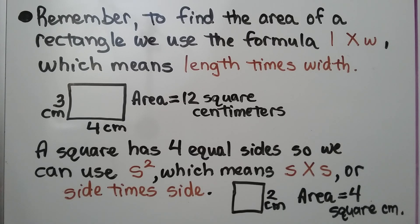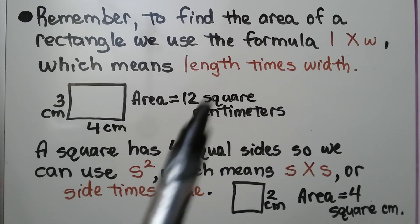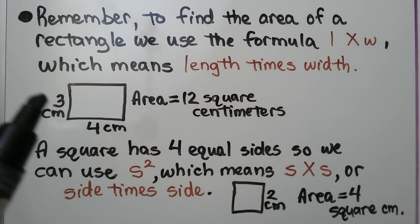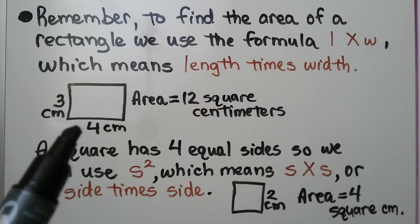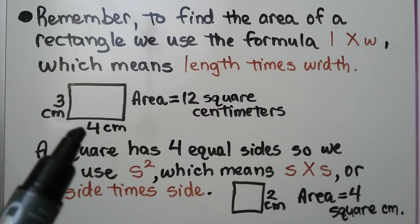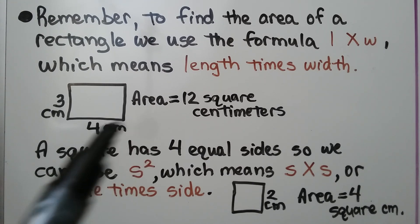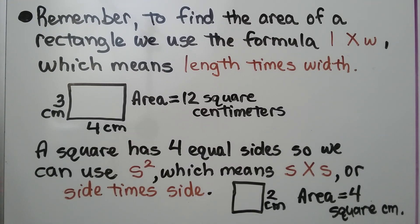Remember, to find the area of a rectangle, we use the formula length times width — L times W. If we have a rectangle where one side is three centimeters and the other side is four centimeters, we multiply three times four. The area is twelve square centimeters.